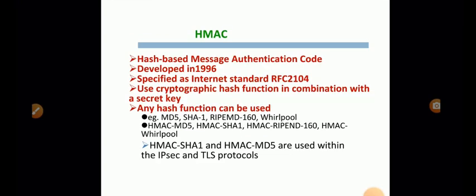So next we are going to discuss about HMAC algorithm. It is a hash based message authentication code developed in 1996. It is specified as internet standard RFC 2104. It uses cryptographic hash function in combination with the secret key. So any hash function we can use. Either you can use MD5, SHA1, RIPEMD algorithm or whirlpool algorithm, HMAC MD5 or HMAC SHA1, HMAC RIPEMD 160 or HMAC whirlpool algorithm.